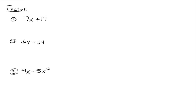Factor 7x plus 14. The first thing you always look for when factoring is the greatest common factor. To do that, you look at all the terms — in this case we just have two — and you say, do these terms have anything in common? Is there anything that can be divided out of all the terms? We look and say, well, we've got 7x and 14. 7 is common to both those terms, so we can factor a 7 out.